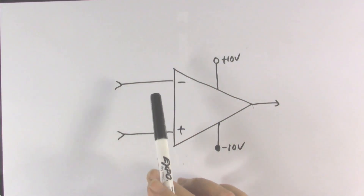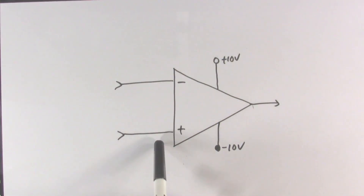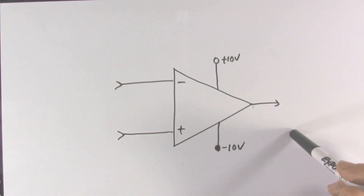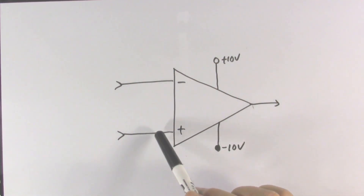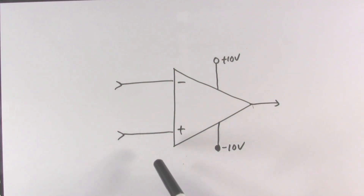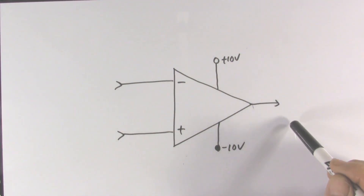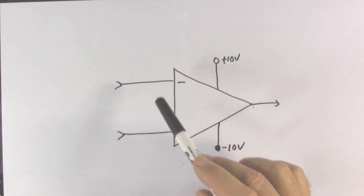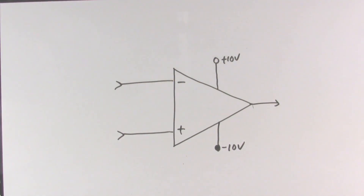More specifically, if the voltage at the inverting input is higher than the voltage at the non-inverting input, the output will be driven to a lower voltage, until either these two voltages become equal or we reach the bottom limit. And if the voltage at the non-inverting input is higher than the voltage at the inverting input, the voltage will go upward or more positive, either until the two inputs become equal or we hit the upper limit.